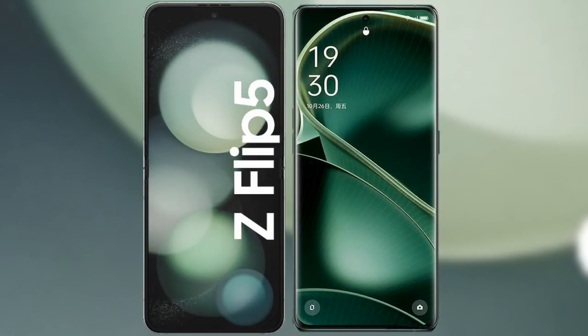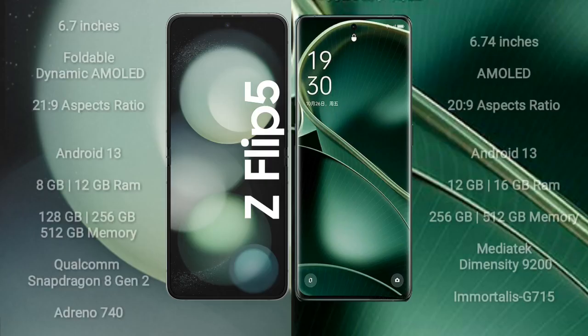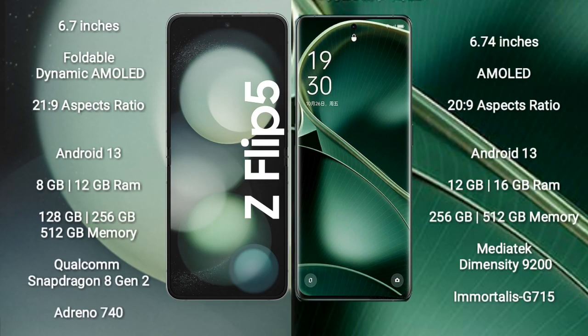I will compare the new Samsung Galaxy Z Flip 5 with Oppo Find A6. The Samsung Galaxy Z Flip 5 comes with a 6.7-inch foldable dynamic AMOLED display with an aspect ratio of 21:9. The Oppo Find A6 comes with a 6.74-inch AMOLED display and an aspect ratio of 20:9.